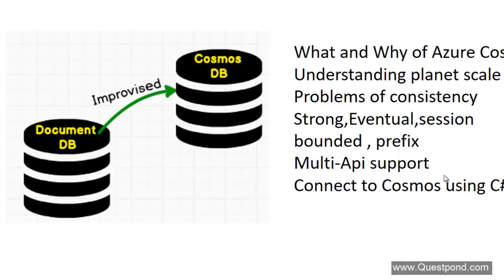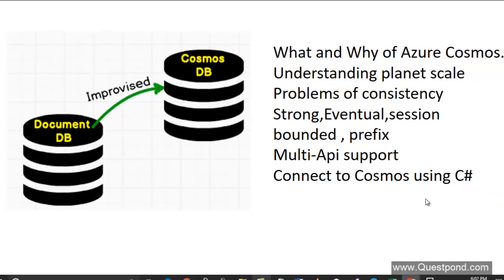In this 30 minutes I have a clear-cut 7-point agenda. First I will start with what and why of Azure Cosmos. Then we will talk about understanding the term Planet Scale Database. We will talk about problems of consistency. Then we will talk about five different consistency levels provided by Azure Cosmos DB: Strong, Eventual, Session, Bounded, Prefix and so on. Finally we will understand Multi-API support and how to connect to Cosmos DB using C# language.